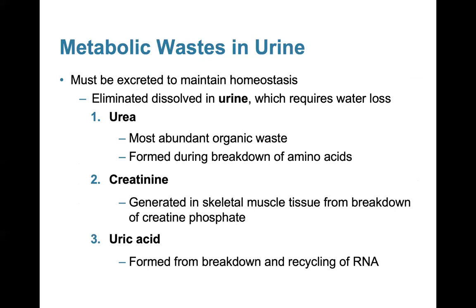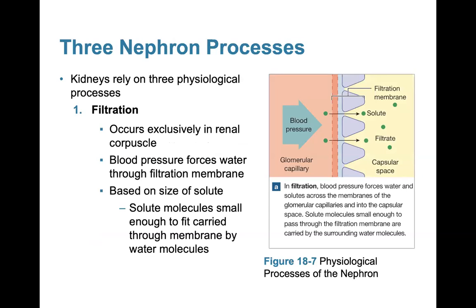Metabolic wastes found in urine must be excreted to maintain homeostasis, dissolved in urine which requires water loss. Urea is the most abundant organic waste, formed from the breakdown of amino acids. Creatinine is generated in skeletal muscle tissue from the breakdown of creatine phosphate. Uric acid is formed from the breakdown and recycling of RNA.